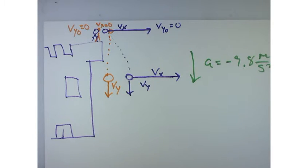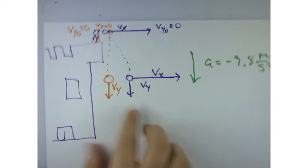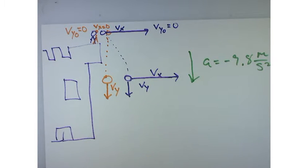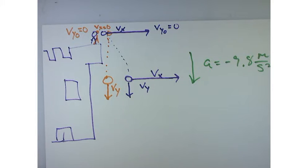Because they both started at zero. So, and the only thing that changes the y direction is the acceleration. And so since they're both accelerating at 9.8 meters per second, then their velocity should be exactly the same at this point in time, right?